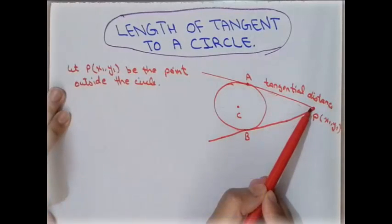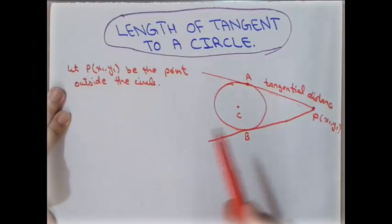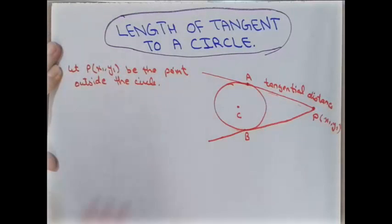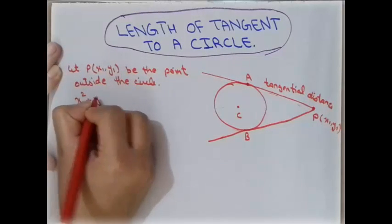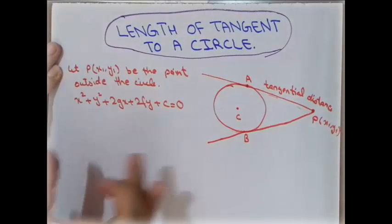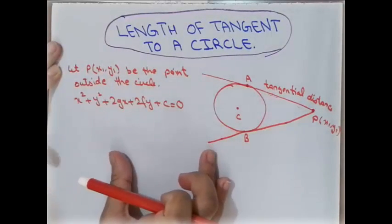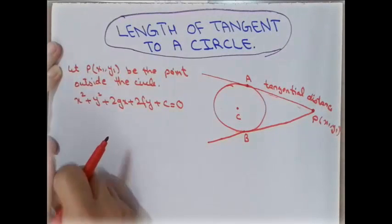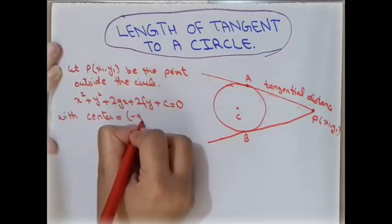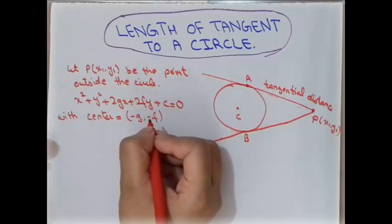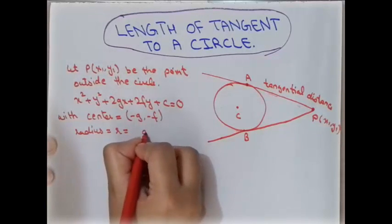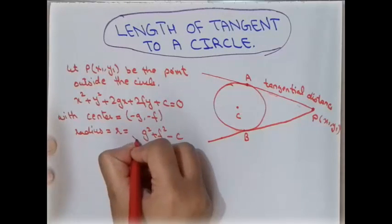The lengths AP and BP are called the length of tangents or tangential length. To find these lengths, we take the general equation of a circle: x² + y² + 2gx + 2fy + c = 0. We already discussed the radius and center of this general equation — the center is (−g, −f), and the radius r = √(g² + f² − c).